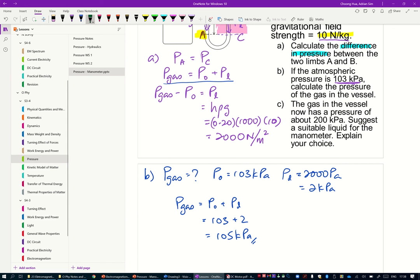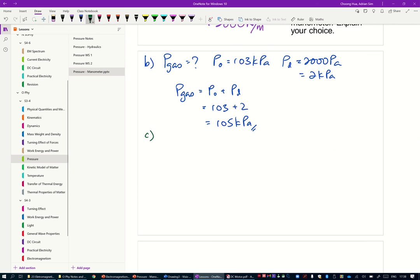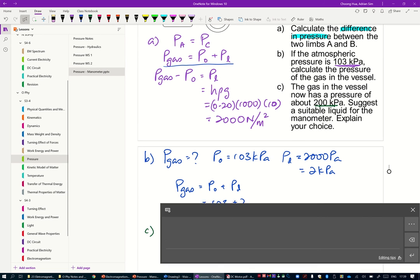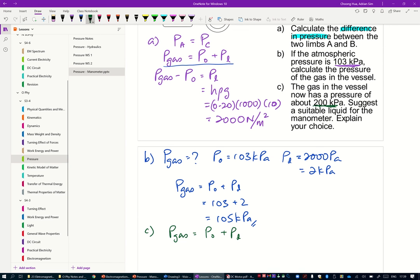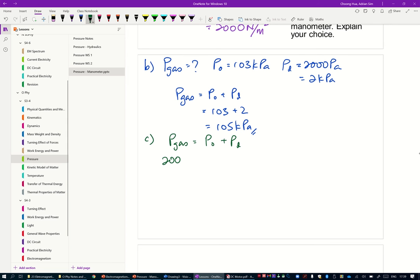The gas in the vessel now has a pressure of 200 kPa. Suggest a suitable liquid for your manometer. Explain your choice. Now in order for me to find a suitable liquid, I first need to determine what will the height be if water is used. It goes back to the same thing. Pressure of gas equals atmospheric pressure plus pressure of liquid. Pressure of gas is now 200 kPa. So this is now 200,000 equals atmospheric pressure 103,000 plus liquid pressure. And the liquid pressure equals 97 kPa.